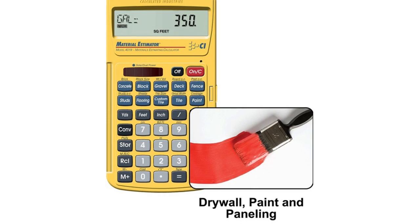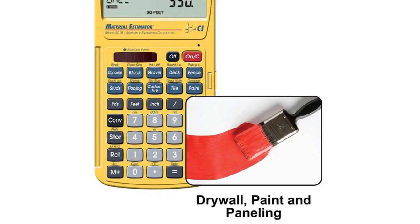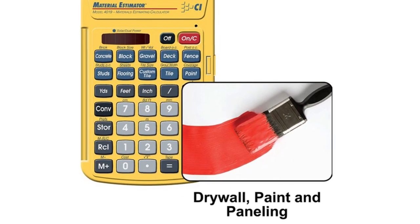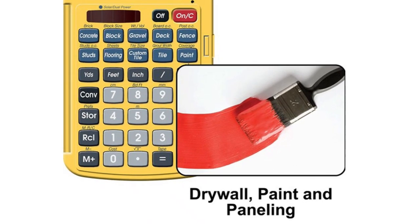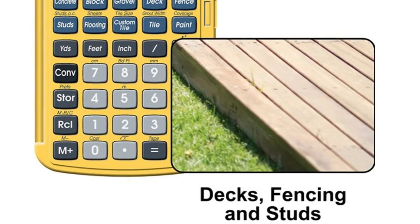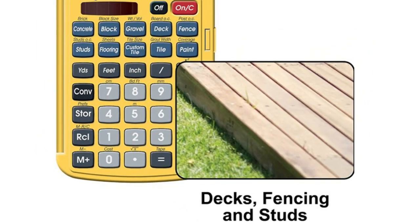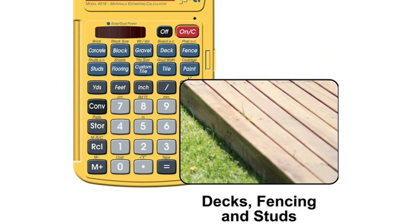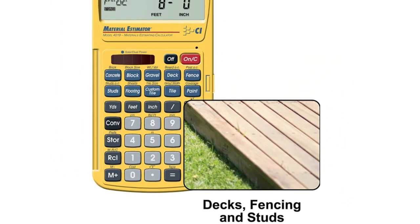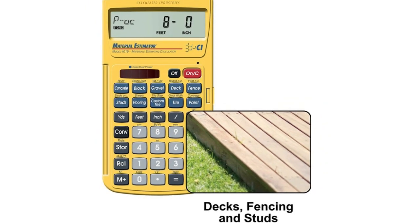Built-in function keys help you easily find the number of boards or posts based on standard board lengths and stored measurements, so you get the fencing or decking material quantities you need to finish the job without costly overages or underages. Works directly in yards, feet, inches, fractions, and meters, including square and cubic formats. No need to convert to decimals.